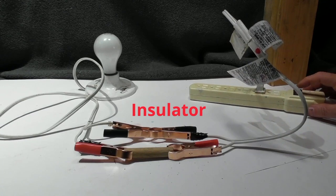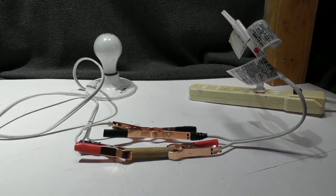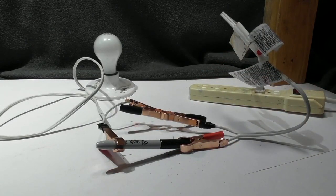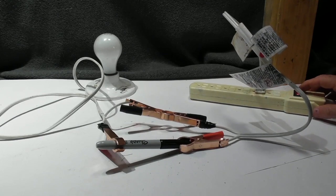After the block of wood, let's try this. How about we try a sharpie. It's plastic. It's hooked up. We go to the switch. And nothing happens. So it is an insulator.